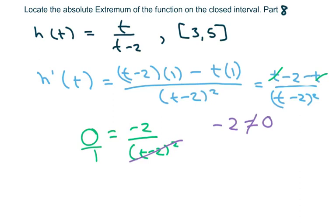Now as far as the left and right endpoints, we're going to plug in 3 and 5. So our left endpoint is going to be f of 3, and my function again was h of t.